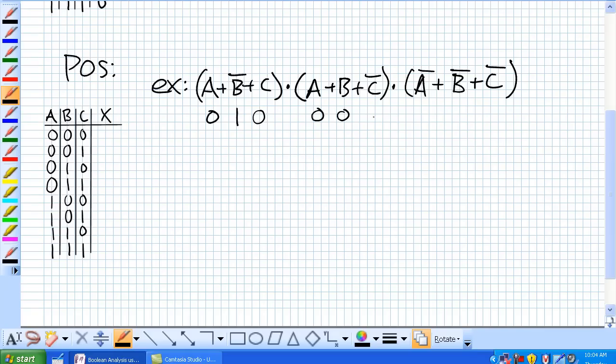So again, it's 0, 0, 1, and 1, 1, 1. Product of sums is the opposite. Certain combinations make this guy 0.